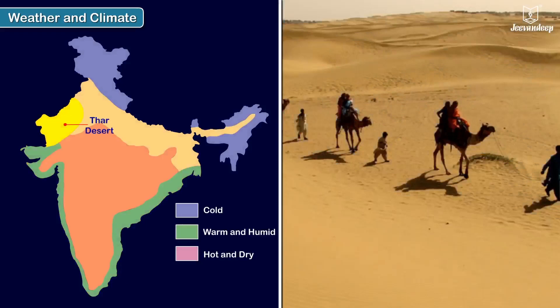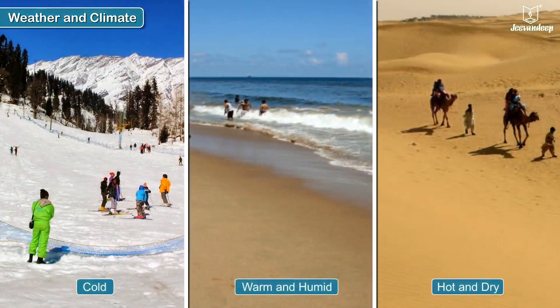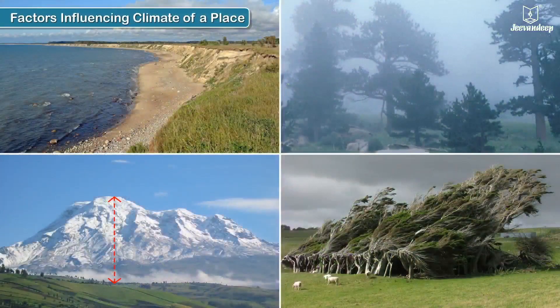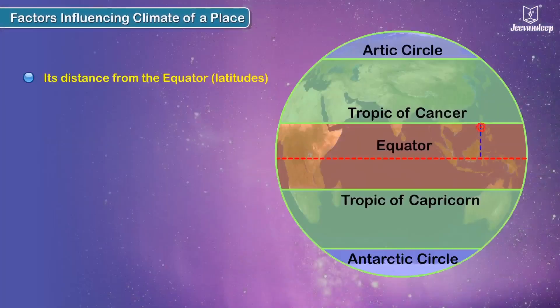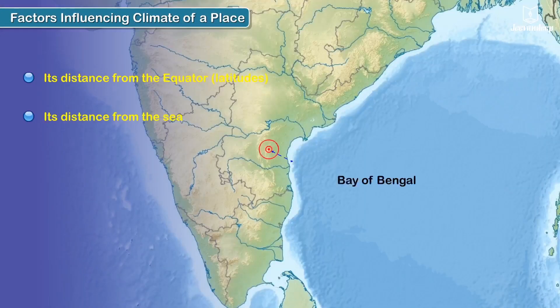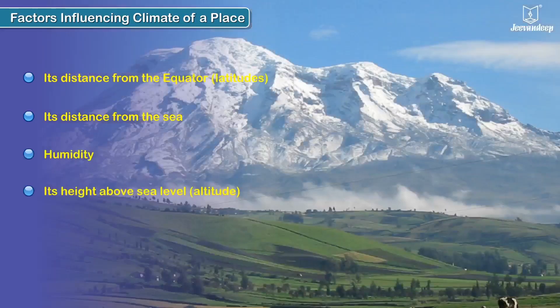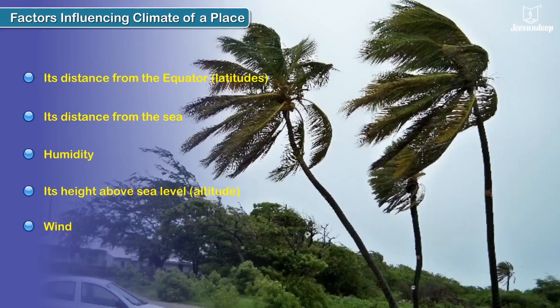The Thar Desert is hot and dry — this is what we refer to as the climate of these regions. The factors influencing the climate of a place include: its distance from the equator (latitude), its distance from the sea (humidity), its height above sea level (altitude), and wind. Let us learn more about these factors.